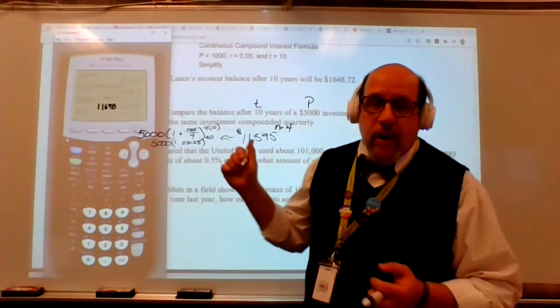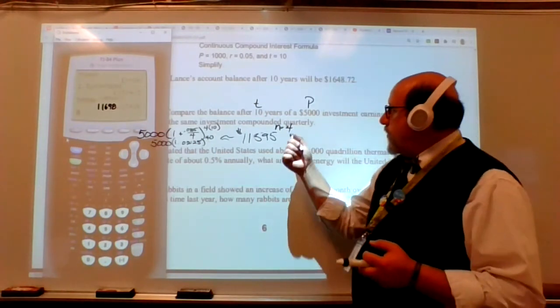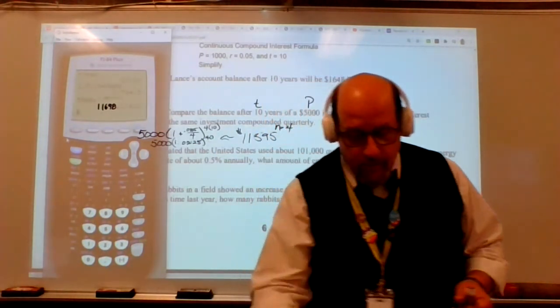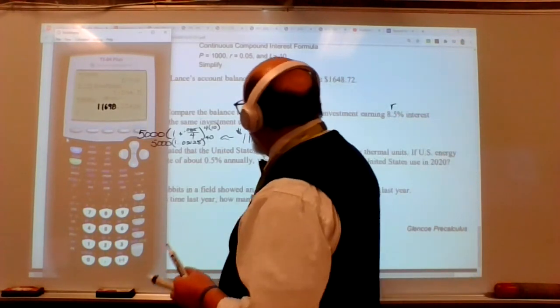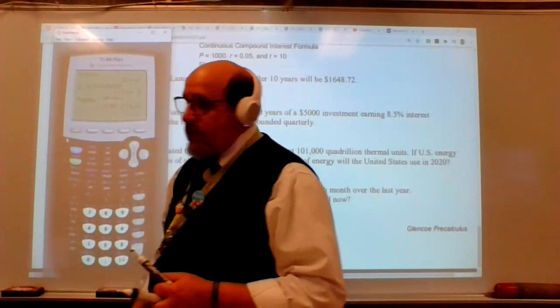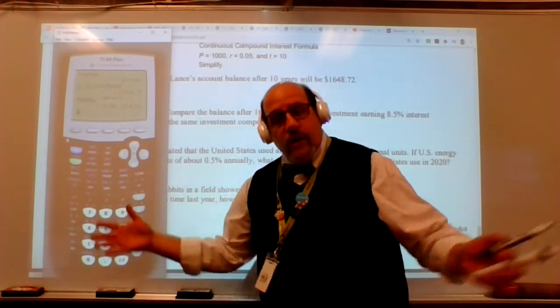5,000. And I'm going to put in E to the, I'm going to put parentheses around it. 0.085 times 10. Close those parentheses. And you're going to see, we got an extra $100 out of this over those 10 years. If this was compounded continuously, you can't really see this number. I'm going to darken it for you. It's 11,698. That's a lot better than if it was compounded every quarter, every three months, as it were.